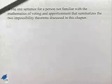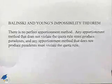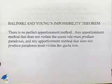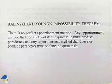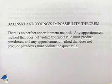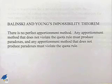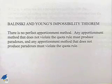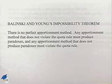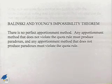So let's review what those are. We have Balinski and Young's impossibility theorem, which states: there is no perfect apportionment method. Any apportionment method that does not violate the quota rule must produce paradoxes, and any apportionment method that does not produce paradoxes must violate the quota rule.